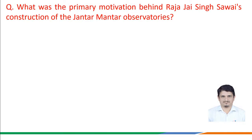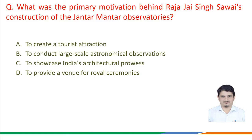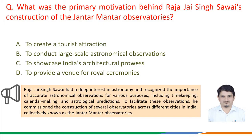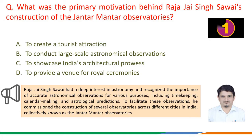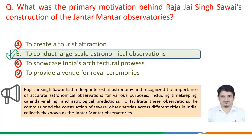The next question is: what was the primary motivation behind Raja Jaisingh Sawai's construction of the Jantar Mantar observatories? Option a) to create a tourist attraction, option b) to conduct large-scale astronomical observations, option c) to showcase India's architectural prowess, option d) to provide a venue for royal ceremonies. Raja Jaisingh Sawai had a deep interest in astronomy and recognized the importance of accurate astronomical observations for time keeping, calendar making, and astronomical predictions. Therefore, the correct answer is option b: to conduct large-scale astronomical observations.